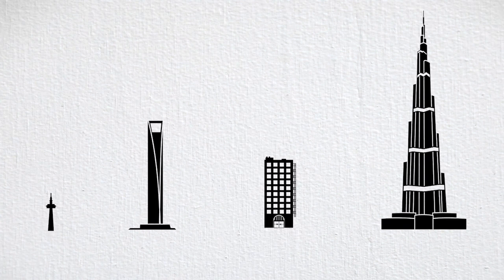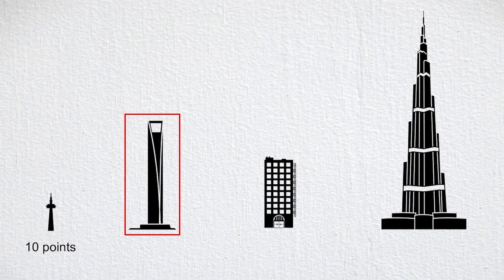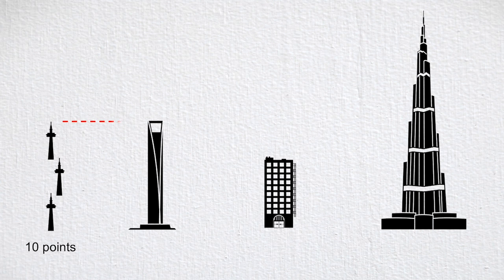Let's explore another option. First, let's classify the buildings into what we'll call effort classes, with the smallest building considered a 10-point class. The choice of 10 is arbitrary – it could have been 100, 1000, or any number for that matter. You'll soon see why it makes no difference. We take a look at building two, and we think it looks about three times the size of our 10-point building. Therefore, we classify it as a 30-point class building.